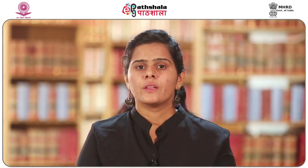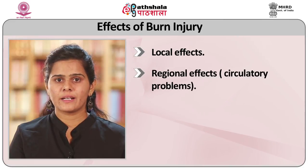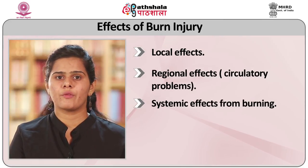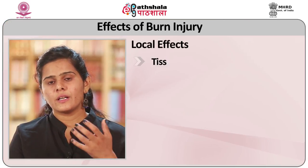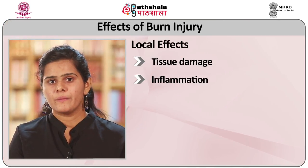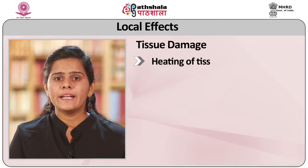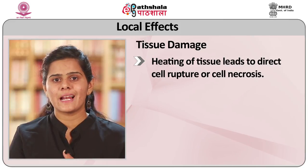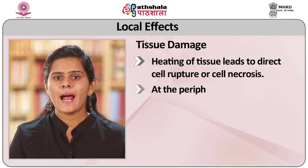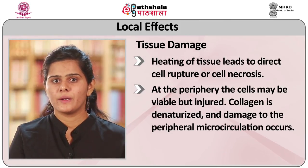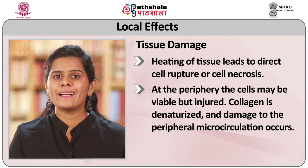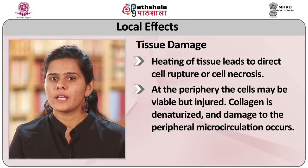Next are the effects of burn injury. There are three types: local effects, regional effects (known as circulatory problems) and systemic effects from burning. Local effects include tissue damage, inflammation and infection. In tissue damage, heating of tissue leads to direct cell rupture or cell necrosis. At the periphery, the cells may be viable but injured. Collagen is denatured and damage to peripheral microcirculation can occur. Capillaries are thrombosed or show increased permeability, resulting in edematous tissues, with external leakage of serous fluid.